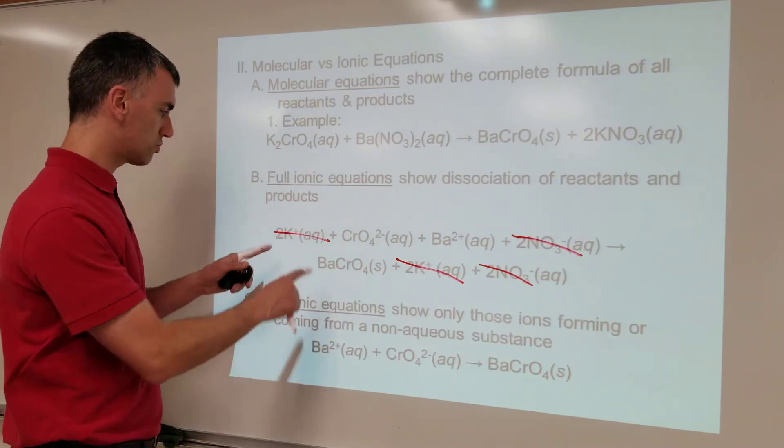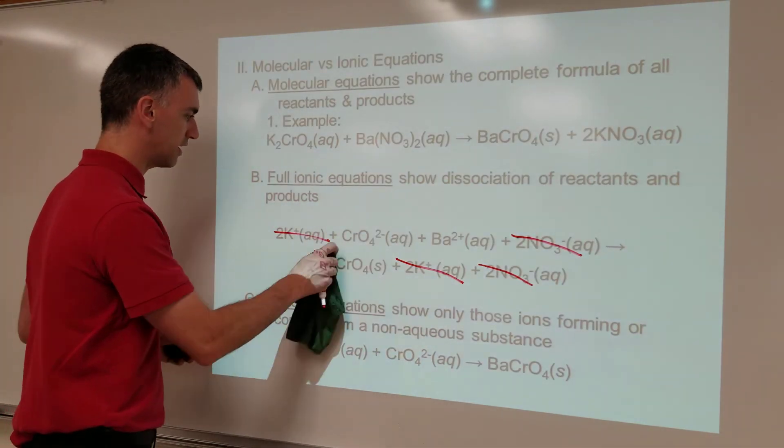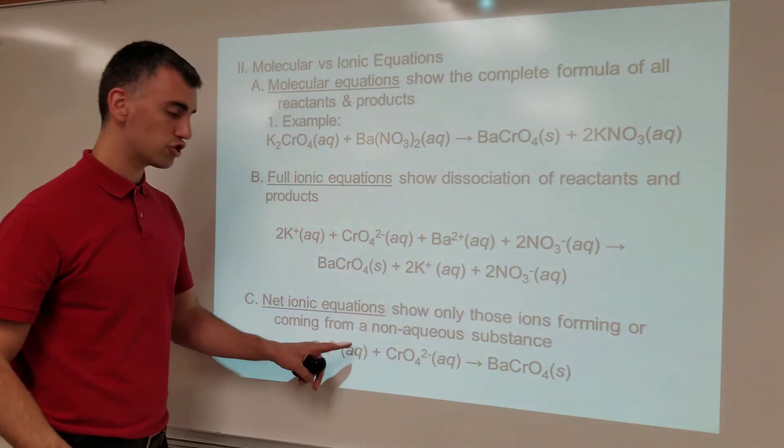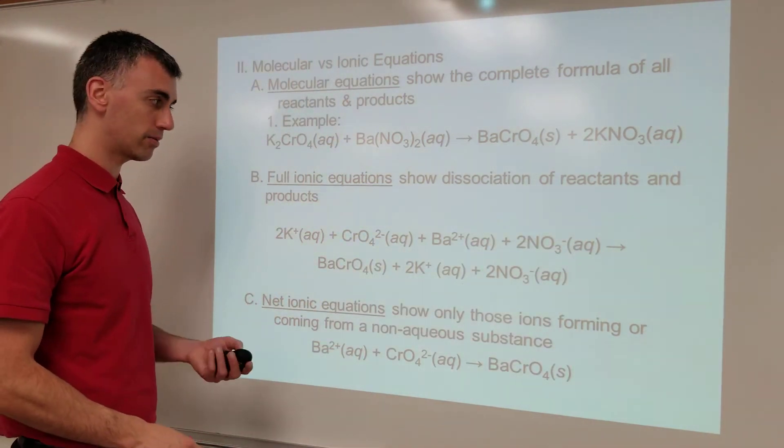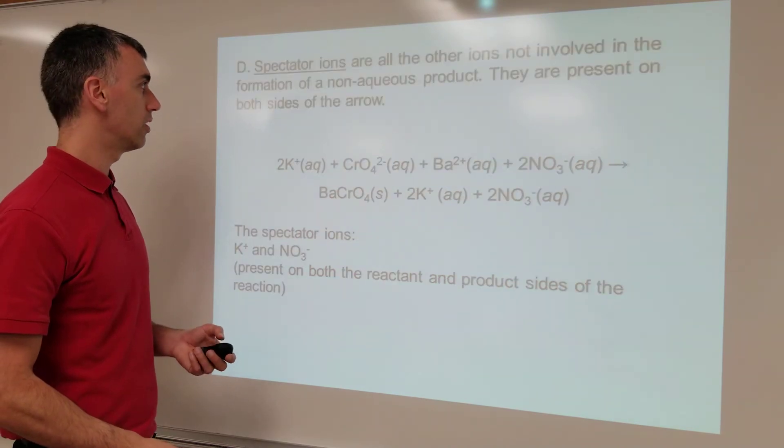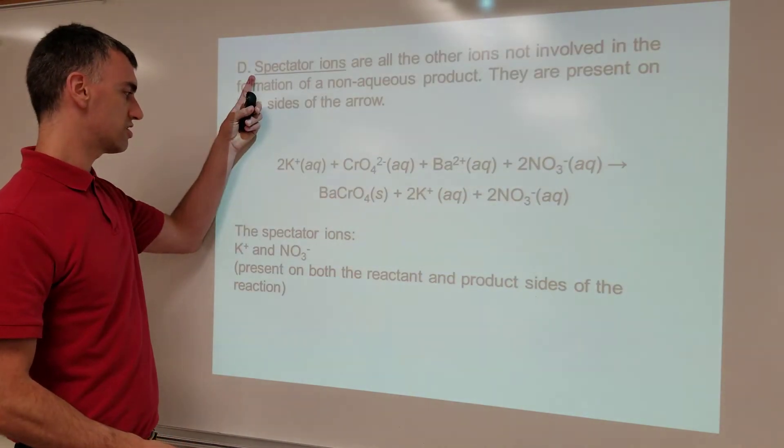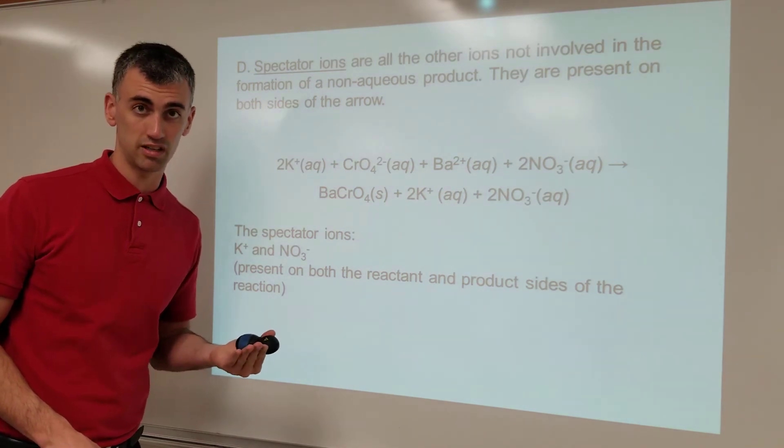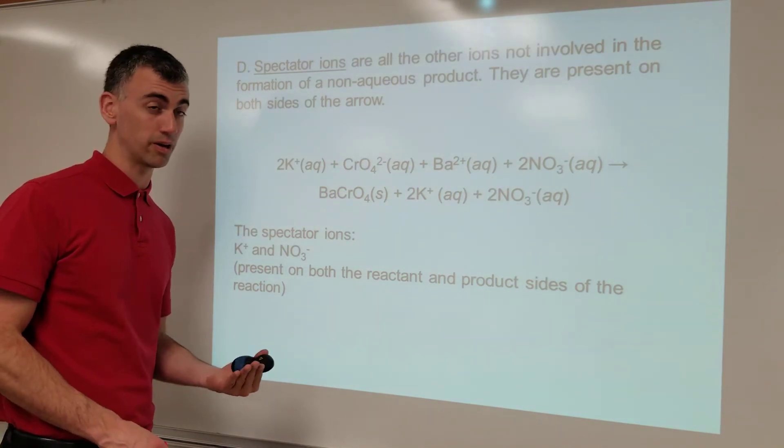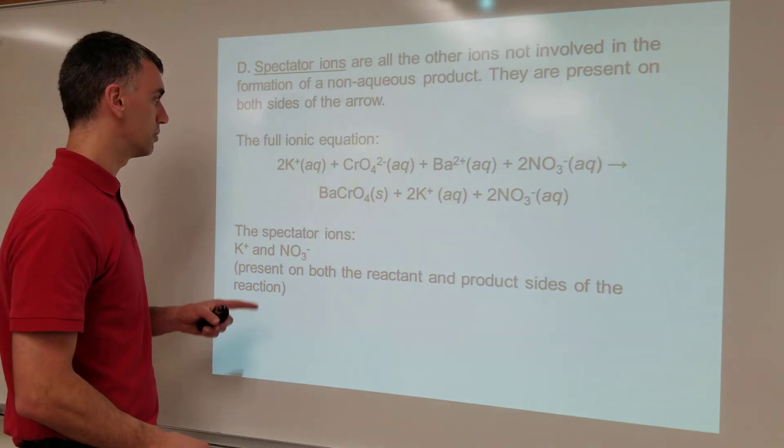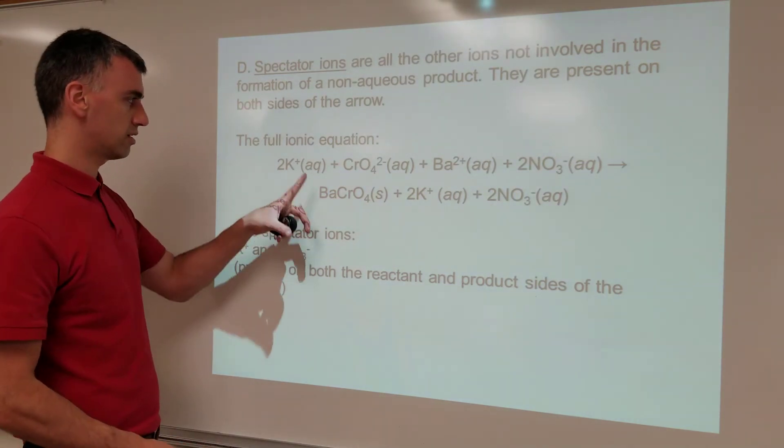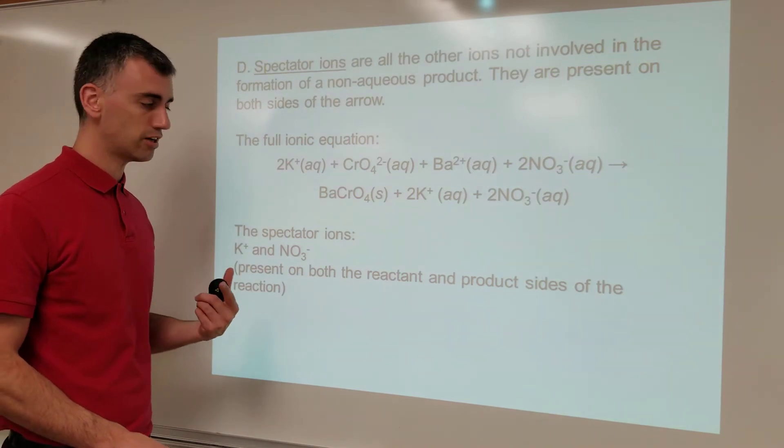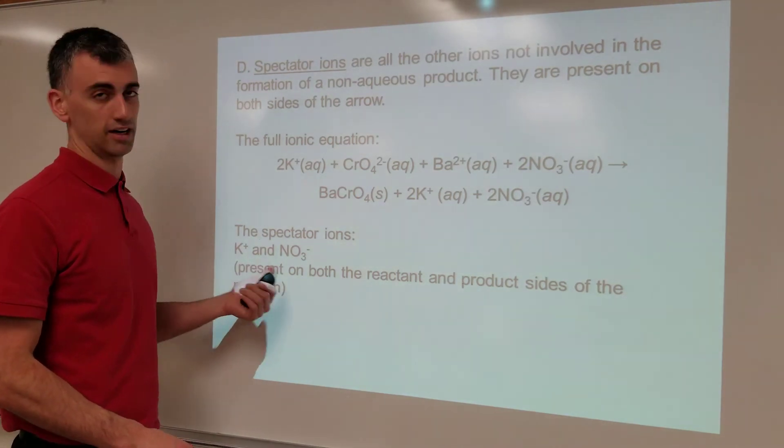And by the way, these ones that I crossed out right here, they've got a name too. So if these things are the main show, so to speak, the main part of the reaction that they're watching, then all the other stuff that's just sitting and watching is a spectator. Because after all, think about it, a spectator just sits and watches an event, doesn't necessarily participate, right? So the potassium and the nitrate are present on both sides. They're the ones that crossed out to show that they're not really participating in the reaction. So they're spectator ions.